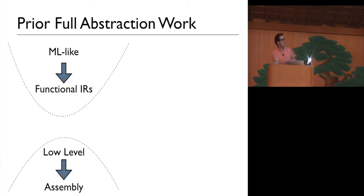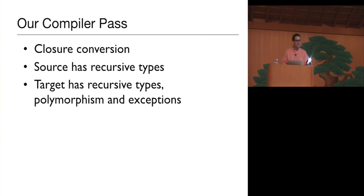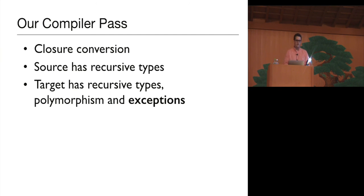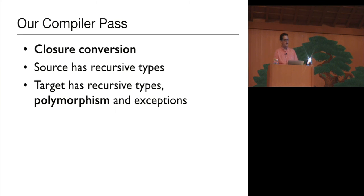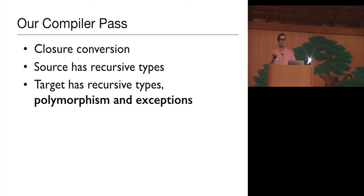In this work, we're still on this top half, but we'll have a bigger gap between source and target with mismatched control flow, and we're not going to rely on termination of either language. We proved this closure conversion pass where source and target have recursive types — so they're non-terminating — and the target has polymorphism and exceptions. The exceptions are mismatched control flow, so we have to accommodate that somehow to make our compiler fully abstract. We include polymorphism because it's a natural addition when doing a typed closure conversion pass. It makes the back translation more difficult because we have to back-translate a feature that doesn't exist in the source language.